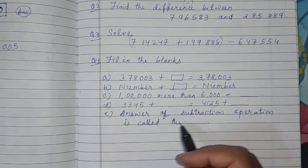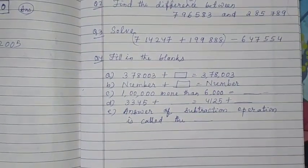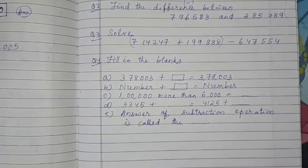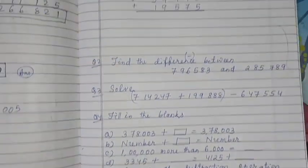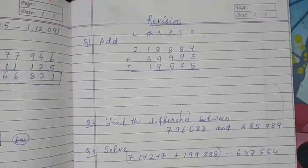Answer of subtraction operation is called the difference. That I discussed today also. In addition, we call it as sum. In subtraction, the answer is called as difference. So this revision question also you do in a separate copy very neatly. Thank you.